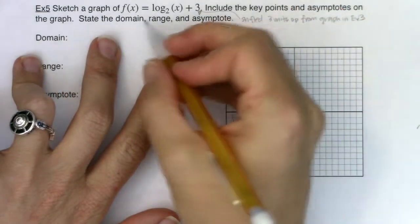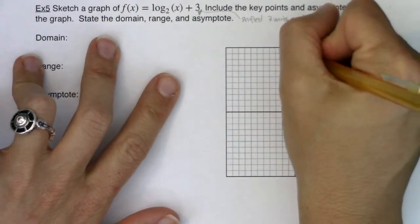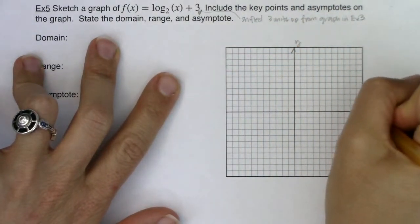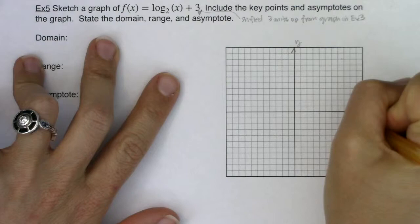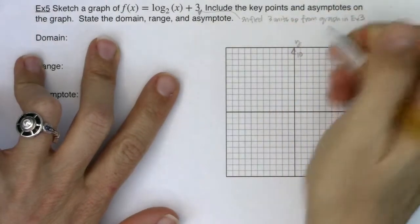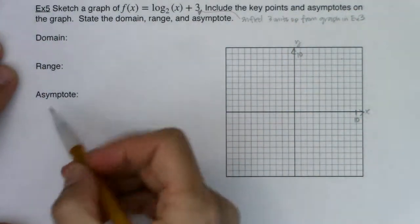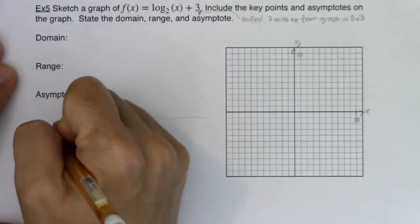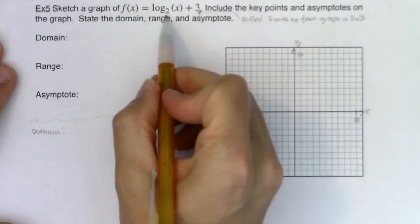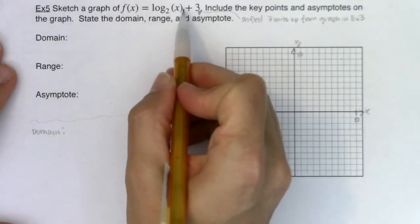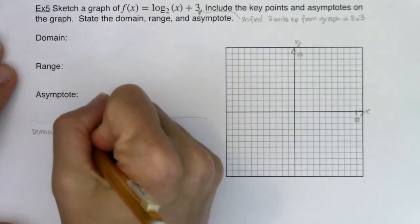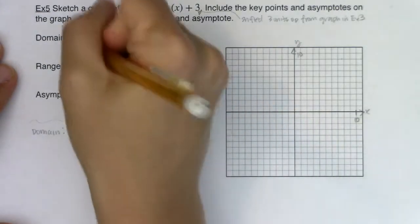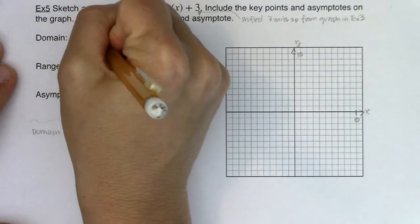We'll get some key points, state the domain, range, and asymptotes. Let me go ahead and scale and label my axes. For domain, always the best place to start—I don't have a fraction, I don't have a radical, I do have a logarithm, so I need x to be strictly greater than 0, which means my domain is from 0 to infinity.